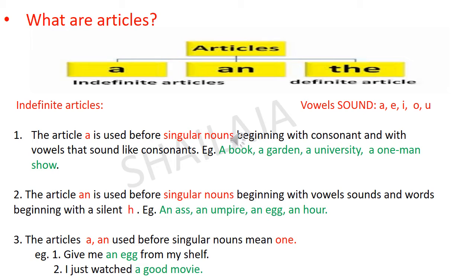The articles 'a' and 'an' used before singular nouns mean 'one'. For example: give me an egg from my chef — 'an egg' means one egg. Second example: I just watched a good movie — 'a good movie' means one good movie.